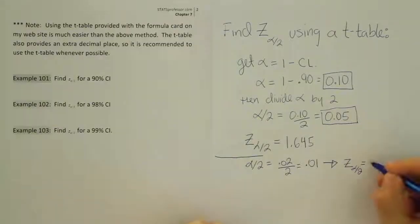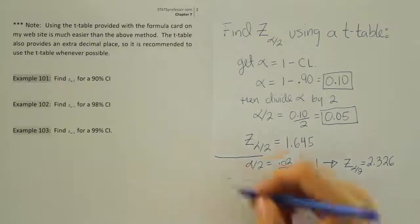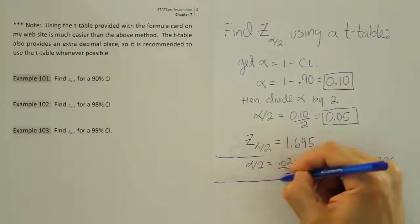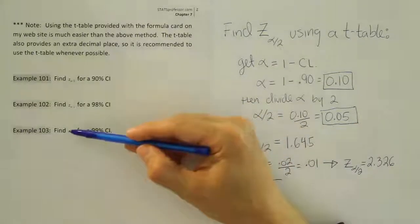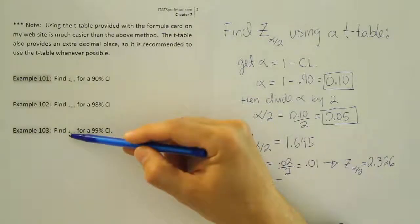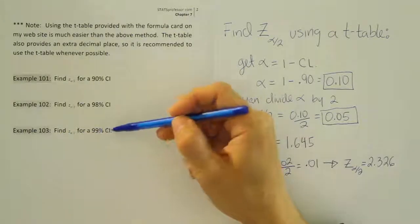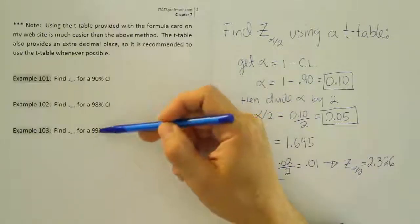Okay, so we found the answer here to be 2.326. Okay, so for our last example here in the list, we have 103, which says find z alpha divided by 2 for a 99% confidence interval. So again, let's demonstrate how simple this is.